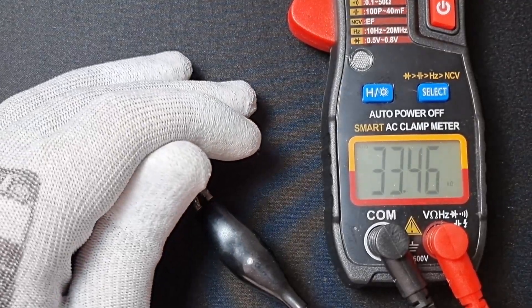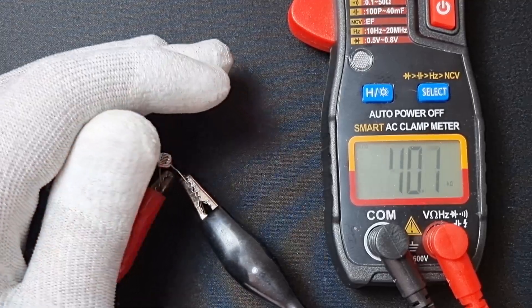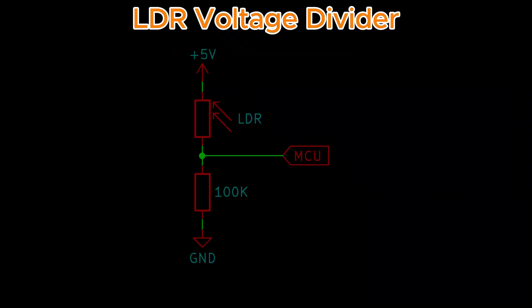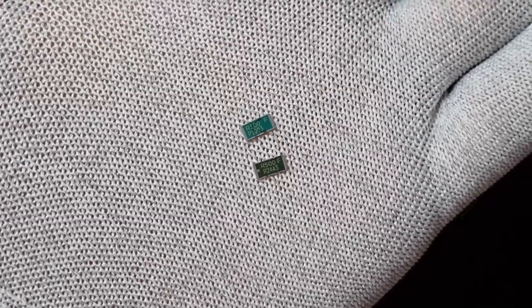Next up is the light dependent resistor. As the light level increases, the resistance of the LDR decreases. It's a pretty simple component that can be used in a voltage divider to measure light levels. Pretty handy, right?